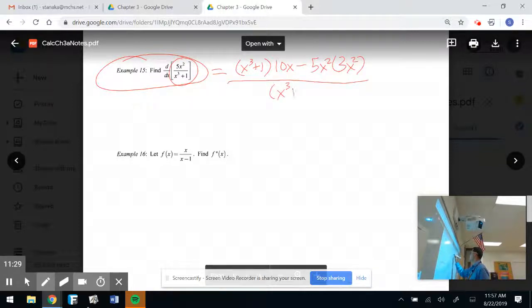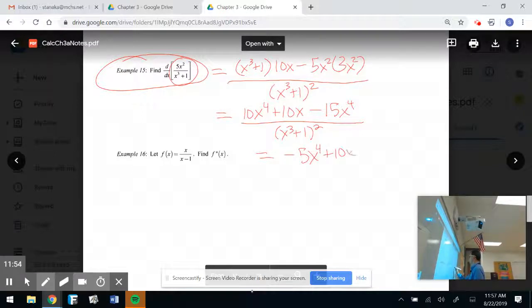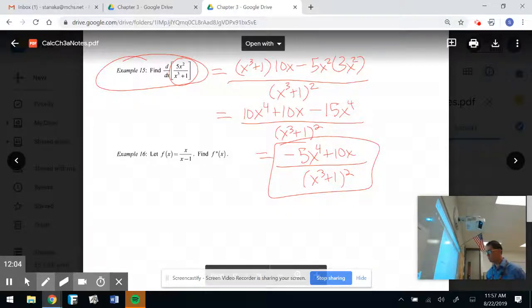And guess what? I'm really nice on these problems. Very rarely am I ever going to make you simplify that bottom. But you always have to simplify the top. So we just got to do a little show off our distributing skills. 10X cubed plus 10X minus 15X to the fourth over X to the third plus one squared. Which is equal to what would that be? Negative 5X to the fourth plus 10X all over X cubed plus one squared. You do not have to foil out the bottom. Don't factor anything out of the top. That bad boy is done.